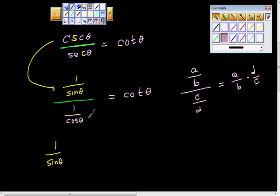And I said that I was going to take the reciprocal of this. And the reciprocal of 1 over cosine theta is cosine theta over 1. And remember that we said that was going to be equal to cotangent theta.